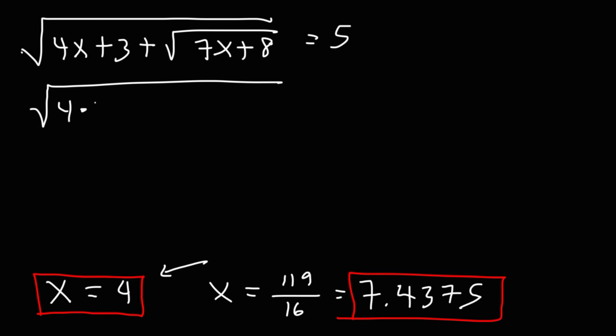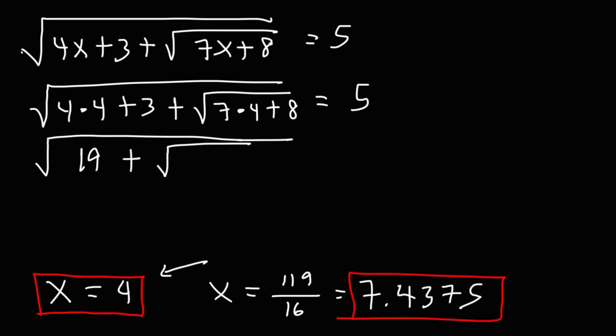So let's replace x with 4. 4 times 4 is 16, and 16 plus 3 is 19. Inside the other radical, we have 7 times 4, which is 28, and 28 plus 8 is 36. Now the square root of 36 is 6, and 19 plus 6 is 25, and the square root of 25 is 5. So this answer is correct. X does equal 4.